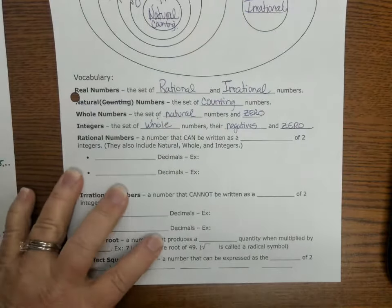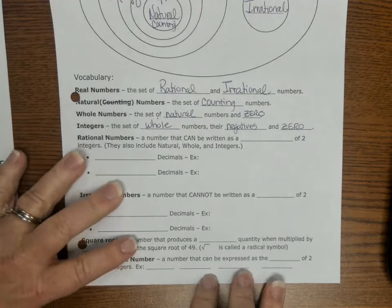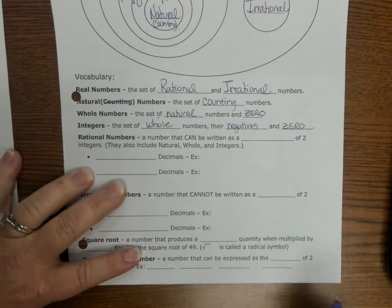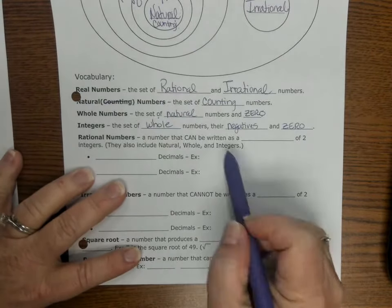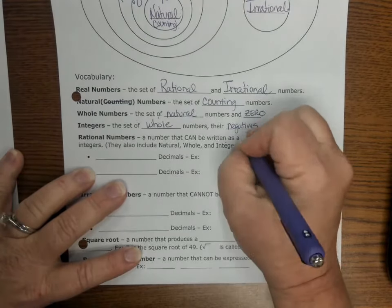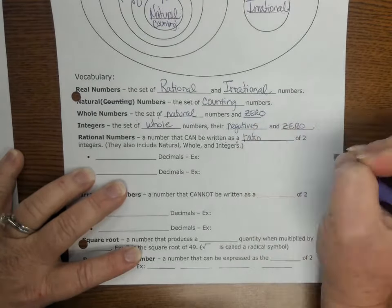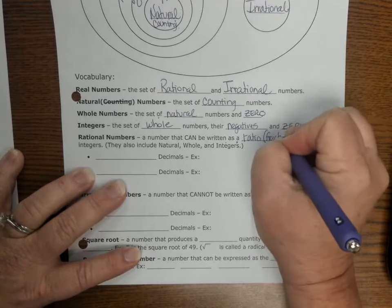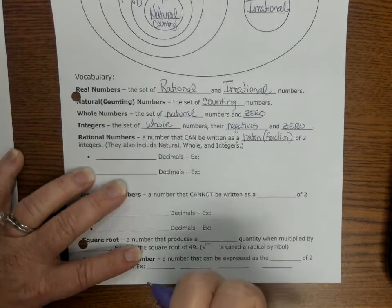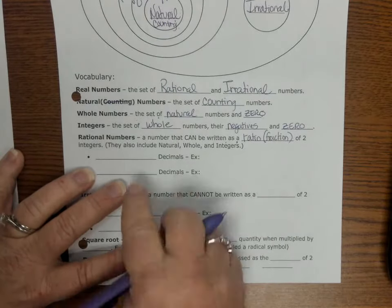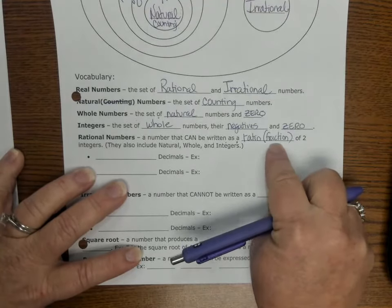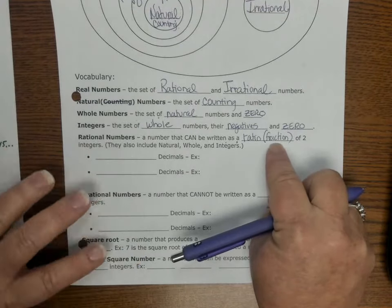All right. Rational numbers. We define rational numbers, and this is kind of a crazy definition for you to remember, but it can be written as a set, can be written as a ratio, and I know that that term, a fraction, of two integers, in other words, of two whole numbers. They also include natural, whole, and integers. So any number that can be turned into a fraction is a rational number.